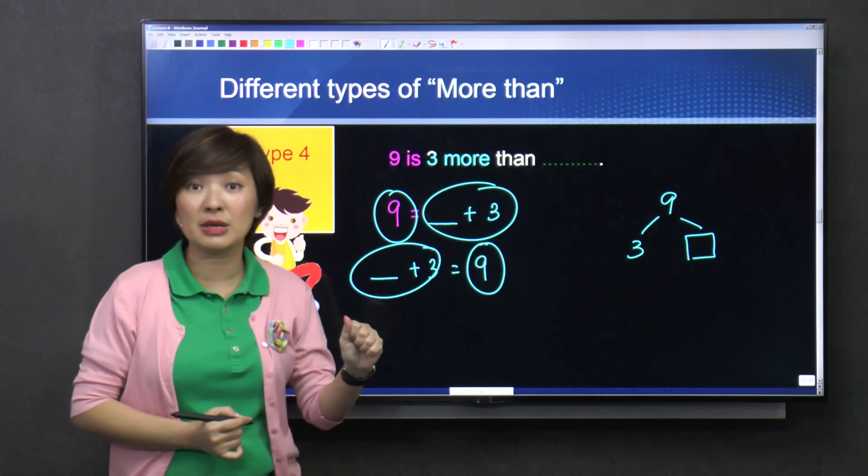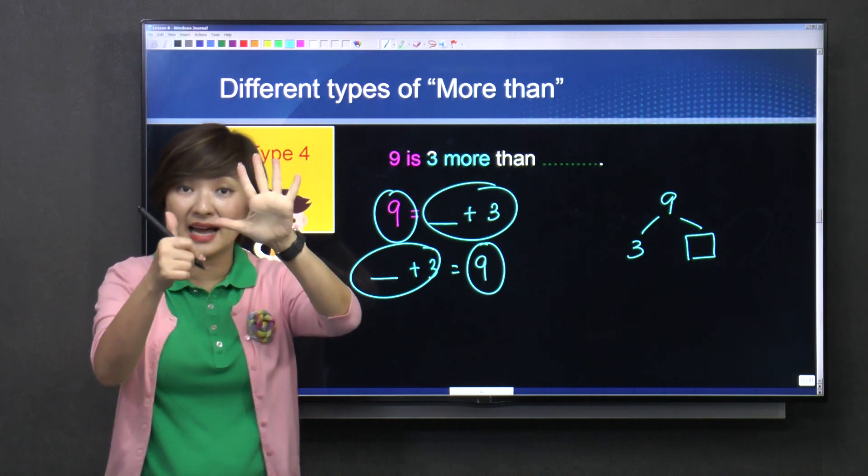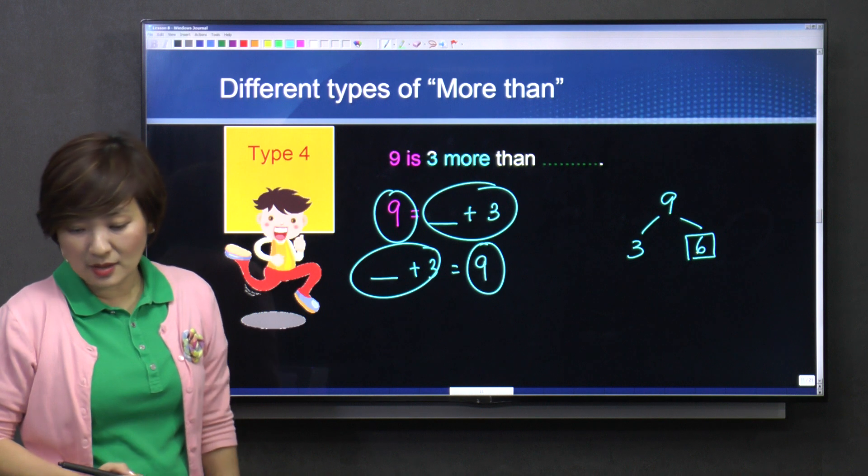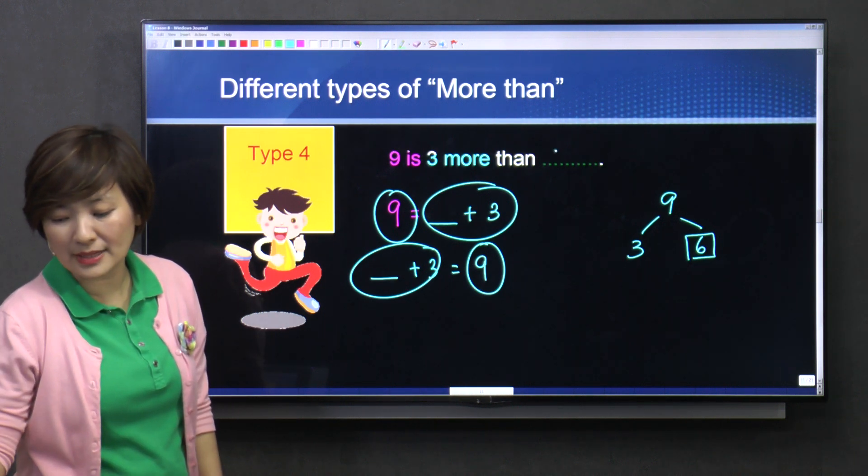Nine is made out of three, four, five, six, seven, eight, nine. So that's six. Three and six make nine. Okay, so nine is three more than six.